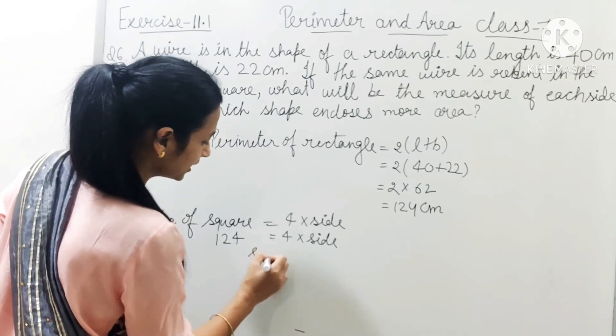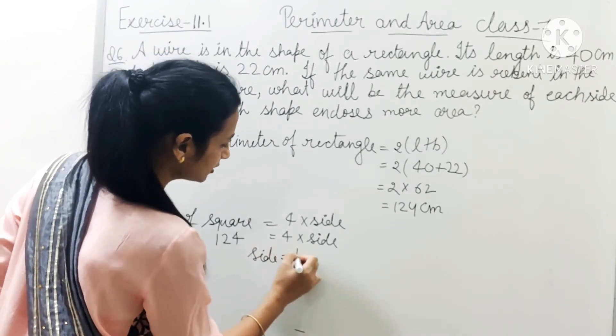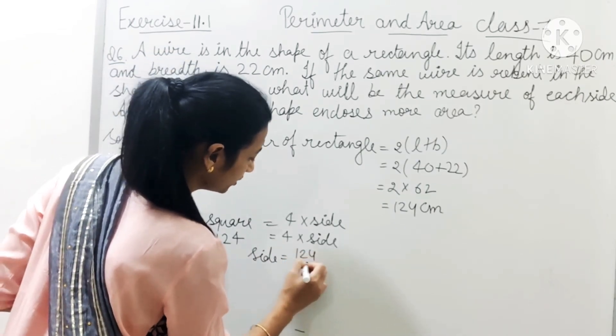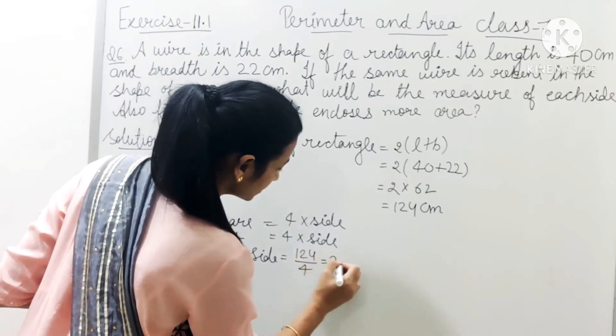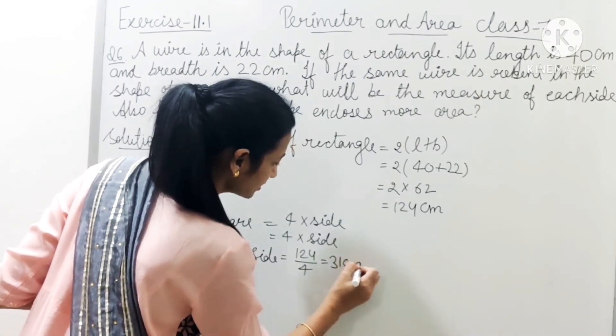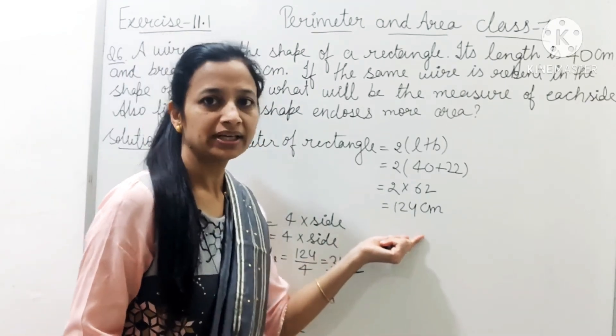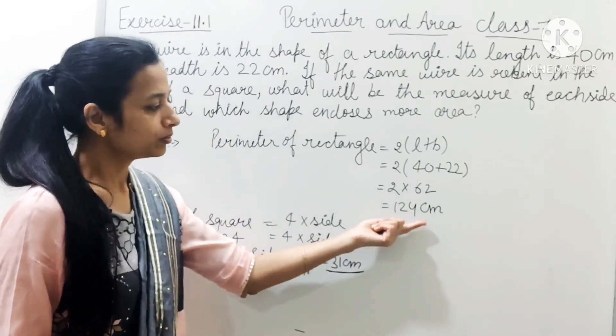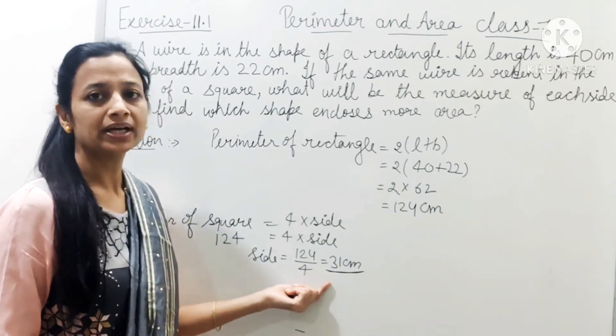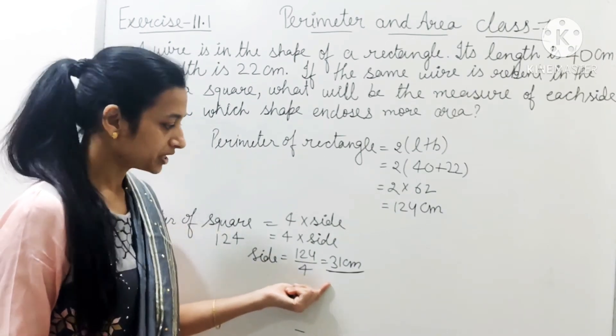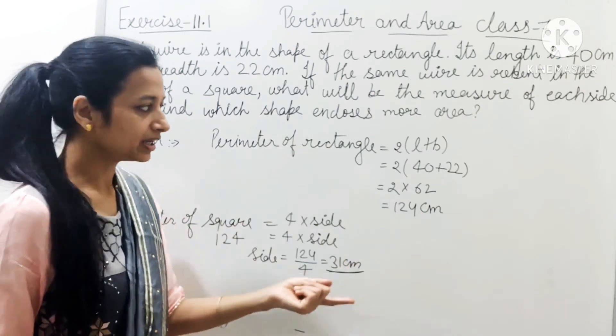Then side equals to 124 upon 4, that is 31 centimeter. So square's side we have found. Perimeter we found of rectangle and with its help we found the square's side. Now we will find both areas.